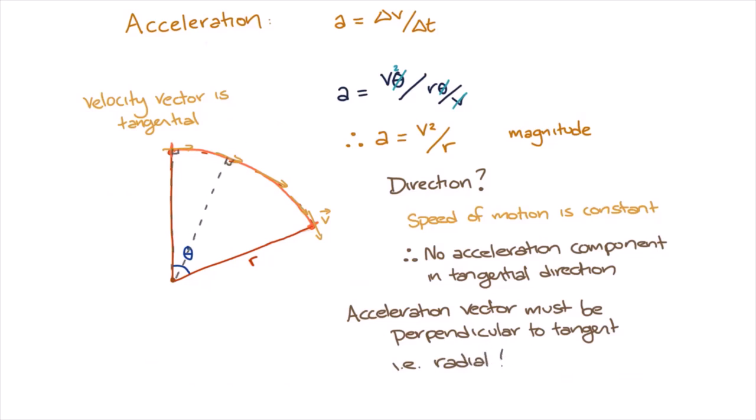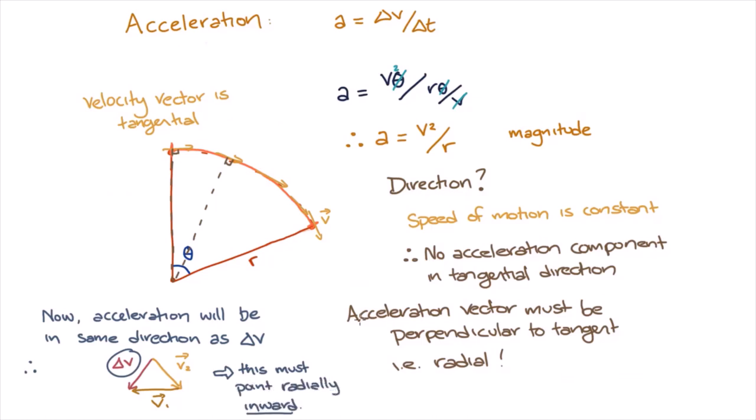The final bit we need to do is to figure out whether this acceleration is pointing radially inwards or radially outwards. Now, we know that the acceleration must be in the same direction as delta v, our change of velocity. So if we draw out our triangle with v1, v2 and delta v, it's clear that delta v is pointing in towards the centre of the circle and not away from the centre of the circle. This means that the acceleration must point radially inwards.